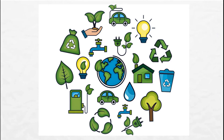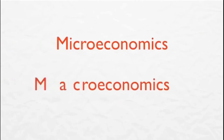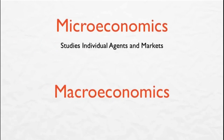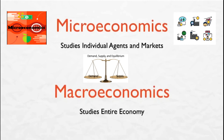Economics is divided into microeconomics and macroeconomics. Microeconomics studies the behavior of individual agents and markets. It examines how decisions and behaviors affect the supply and demand for goods and services, which determine the prices we pay. These prices in turn determine the quantity of goods supplied by businesses and the quantity of goods demanded by consumers.